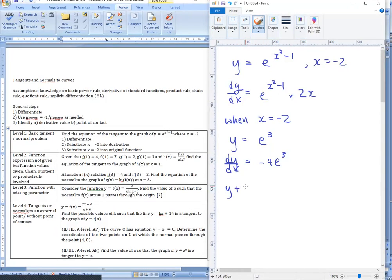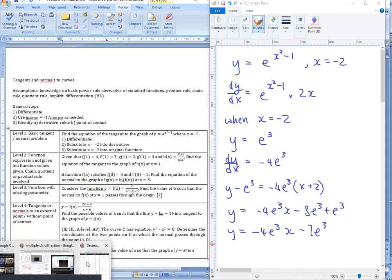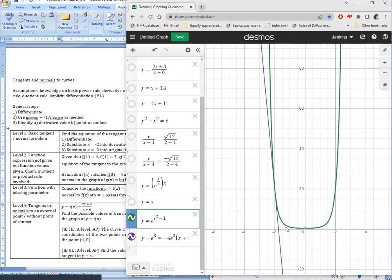equals to the gradient, x minus minus 2, so x plus 2. And I think this form is adequate for scoring marks. It's definitely adequate for scoring marks on an IB exam. I think IGCSE or O level, or even A level, if they don't ask you to expand it and give it in y equals mx plus c form, then this is also an acceptable final form. Of course, you can expand the right side and put it into y equals mx plus c form, y equals negative 4 e to the cubed x minus 7 e cubed. So that would be the final answer. And I do have the Desmos result shown here, so the U shape curve is the original function and the purple line is a tangent.